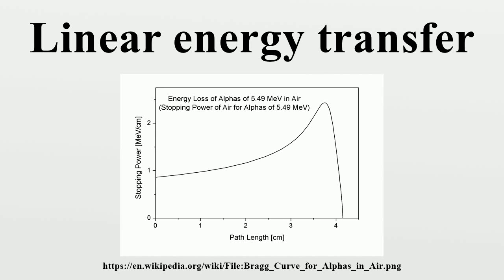Linear energy transfer (LET) is a term used in dosimetry. It describes the action of radiation upon matter, and is identical to the retarding force acting on a charged ionizing particle traveling through matter. It describes how much energy an ionizing particle transfers to the material traversed per unit distance. By definition, LET is a positive quantity and depends on the nature of the radiation as well as on the material traversed.